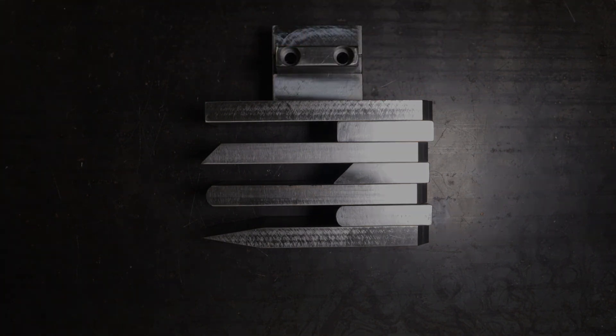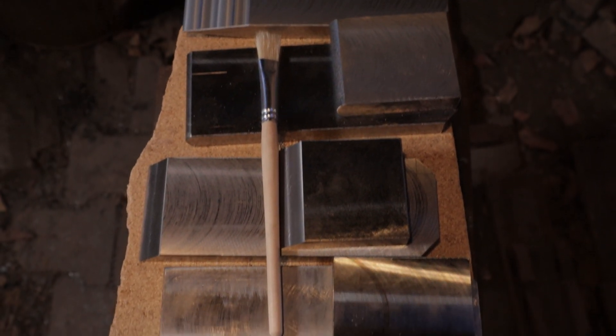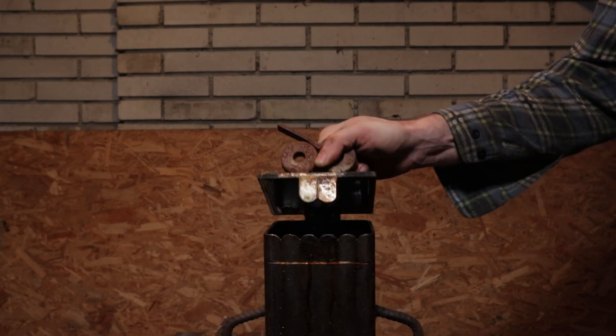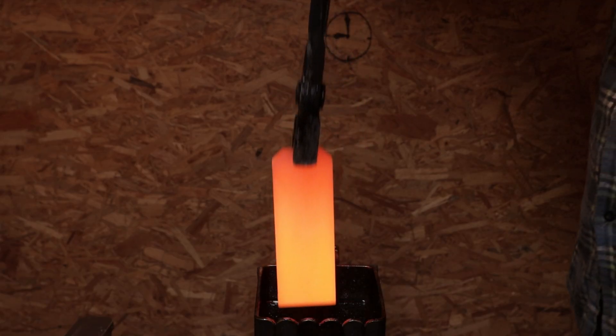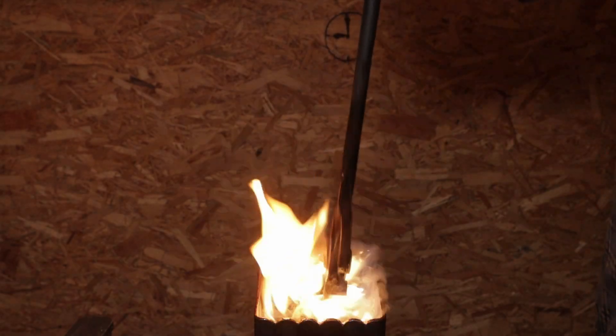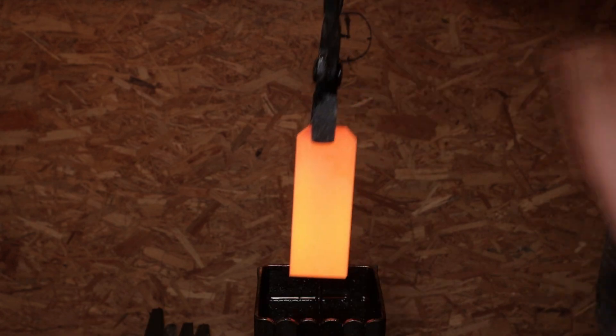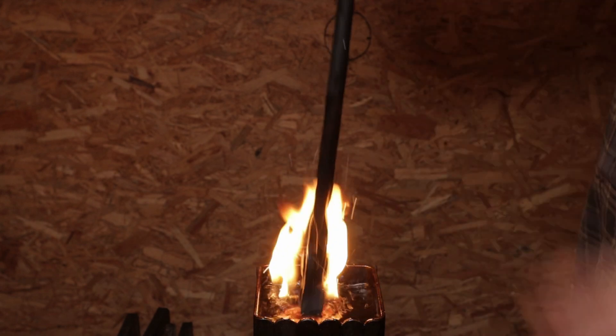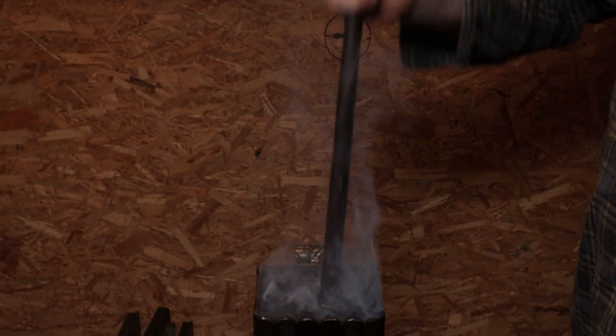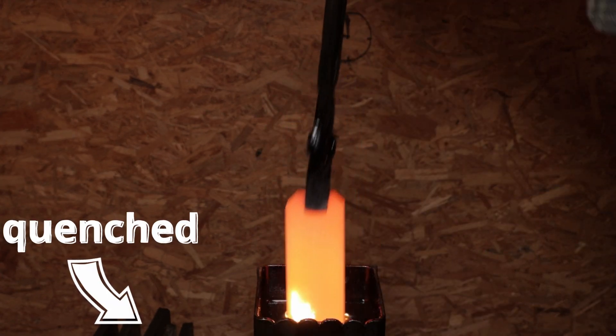The next step is quenching to harden up the steel. I'm using preheated canola oil for quenching. It might seem like I'm quenching the same piece all over again, but I can assure you I'm not.